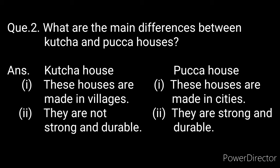Draw a line between kachya house and paka house. At the side of kachya house, number one: these houses are made in villages. Yeh makaan gaon mein banate hain. At the side of paka house, number one: these houses are made in cities. Yeh makaan shehron mein banate hain. Number two, kachya house: they are not strong and durable. Kachya makaan majboot aur tikau nahi hoti. Paka house, number two: they are strong and durable. Paka makaan majboot aur tikau hoti hai.